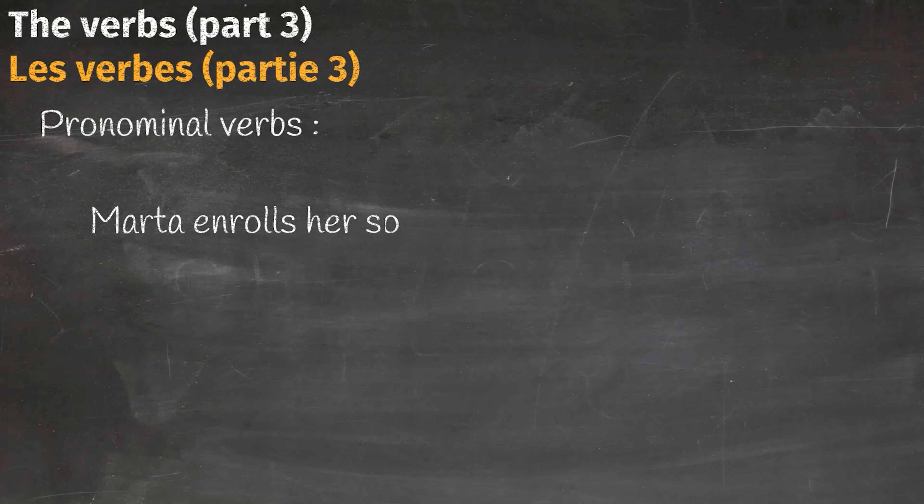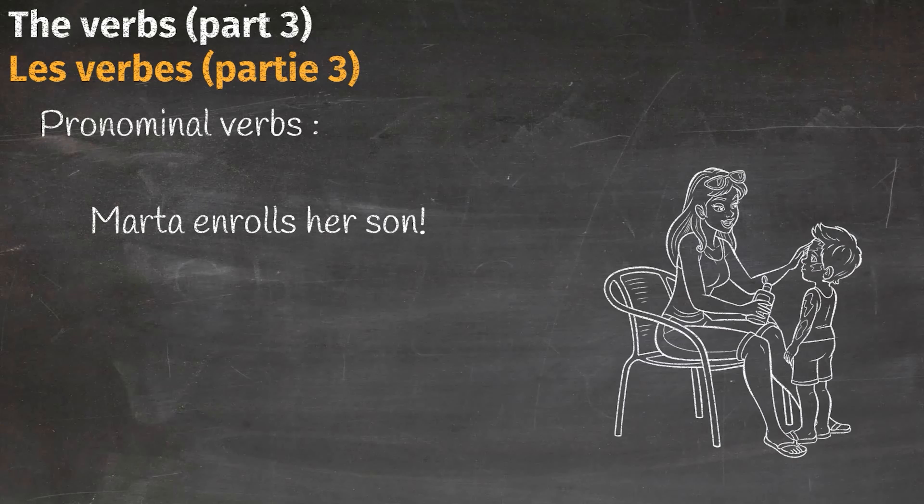Let's start with a question. How can I say 'Marta enrolls her son'? Well, we only need to know two things. First, the verb to enroll, which is 'inscrire', and her son - 'son fils'. We got it. Now, let's see how to conjugate to enroll in French.